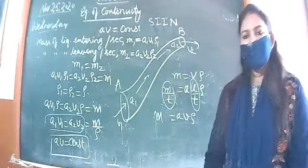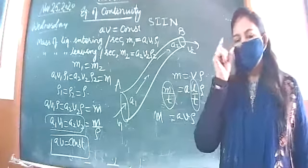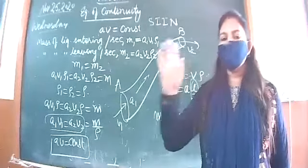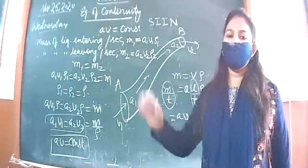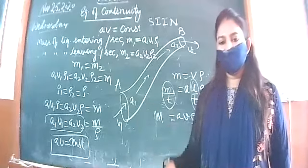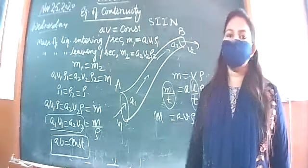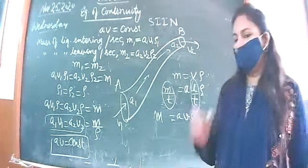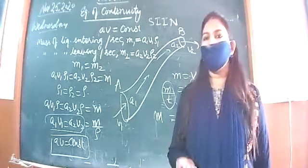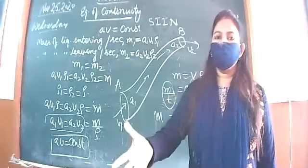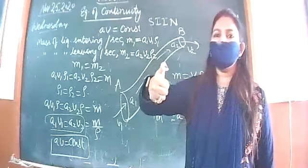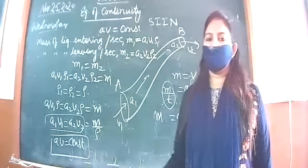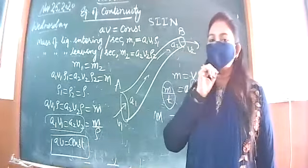A simple example: deep water runs slow. Where depth is higher, the area of cross section is larger so velocity is lower — that spot is more dangerous. Another example: when watering plants with a pipe, covering half the opening with your thumb reduces the area, so the speed of the water increases. This is a practical example of the equation of continuity.